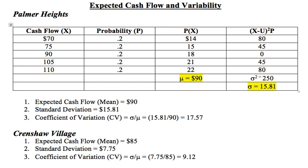In the last column, we have the expected mean or expected outcome, from which we can determine the standard deviation. To compute the standard deviation, we take the quantity of the random variable X minus the expected mean, square it, and multiply by the probability. For the first case: 70 minus 90, squared, multiplied by the probability. The resulting values are 80, 45, 0, 45, and 80.